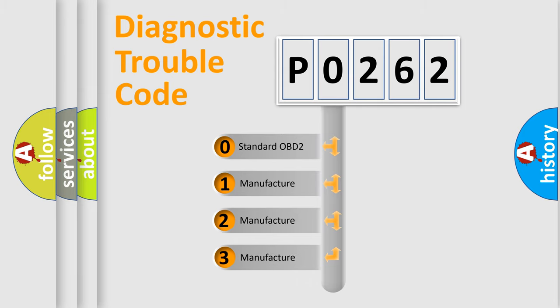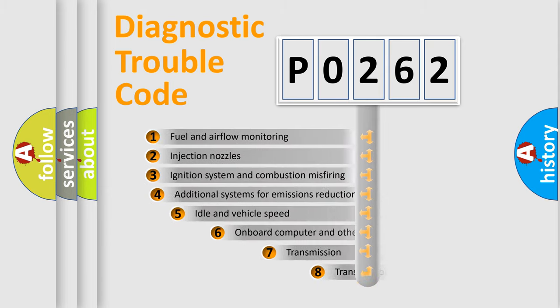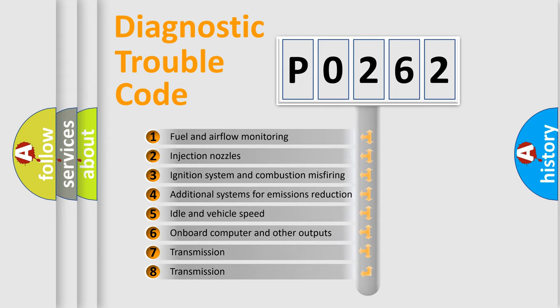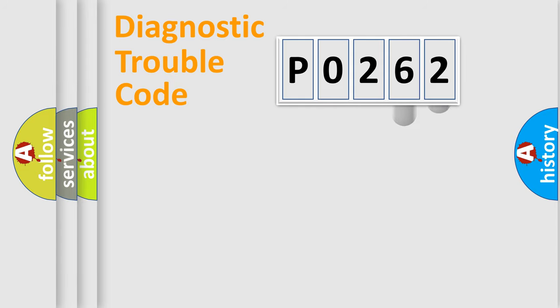If the second character is expressed as zero, it is a standardized error. In the case of numbers 1, 2, or 3, it is a manufacturer-specific expression of the car-specific error. The third character specifies a subset of errors. The distribution shown is valid only for the standardized DTC code.